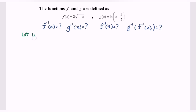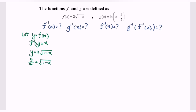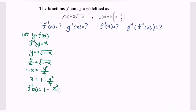To find f inverse, let y equal f(x), so f inverse of y equals x. We have y equals 2 multiplied with the square root of 1 minus x. Express x in terms of y: y over 2 equals the square root of 1 minus x. Squaring both sides: 1 minus x equals y squared over 4. Rearranging: x equals 1 minus y squared over 4. Therefore, f inverse of x equals 1 minus x squared over 4.